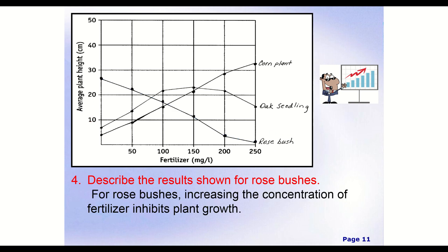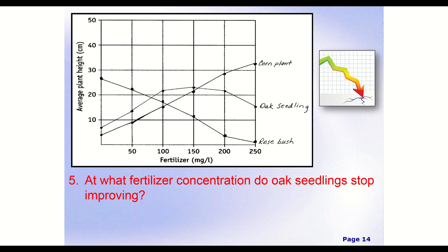So a possible answer would be for rose bushes, increasing the concentration of fertilizer inhibits plant growth. When I say inhibits, that means prevents or stops the plant growth. That doesn't want to grow as easily. So feel free again, you don't need to write these word for word. Feel free to tweak them a little bit for language that maybe suits you better.